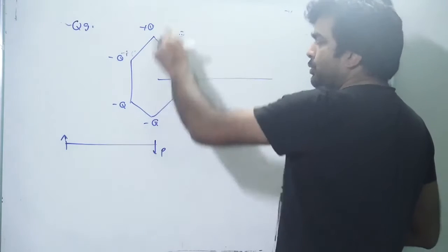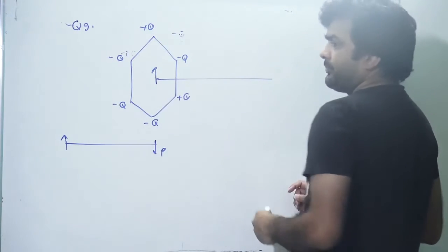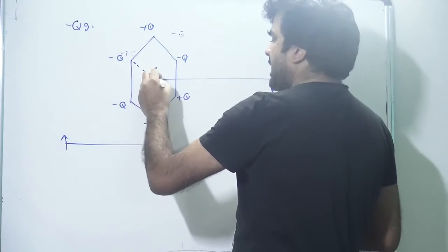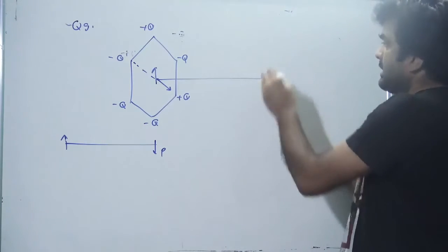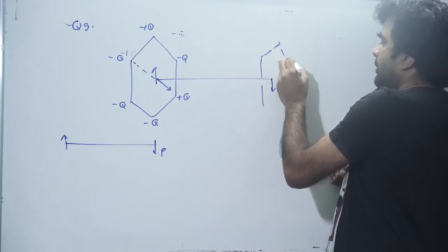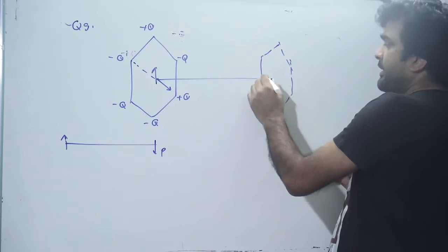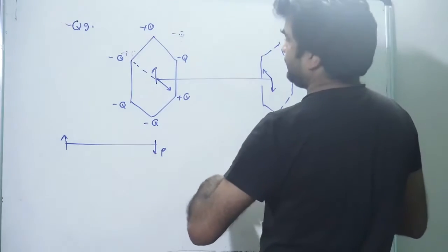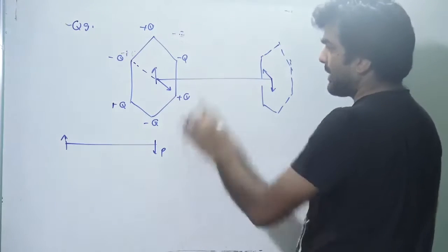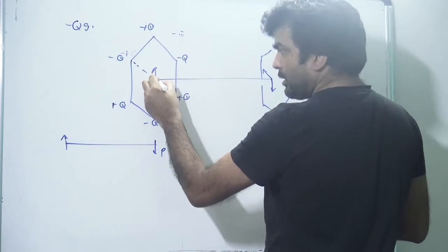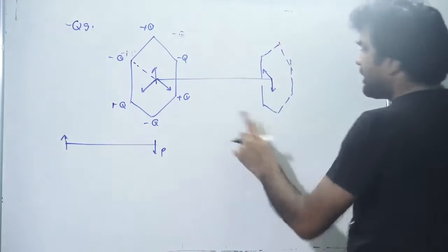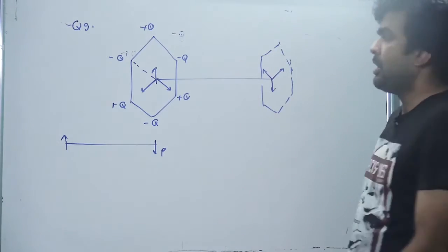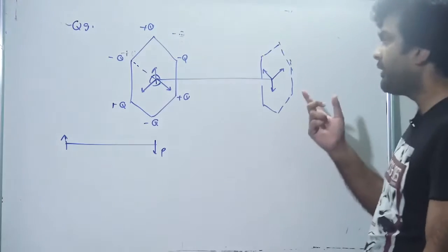If we consider the first pair as a dipole, the dipole moment is in one direction and the electric field due to them will be in the opposite direction. Similarly for the second pair, and the third pair with -Q and +Q — each gives an electric field in the equatorial plane. These three vectors form 120-degree angles with each other, and therefore their resultant is equal to zero.